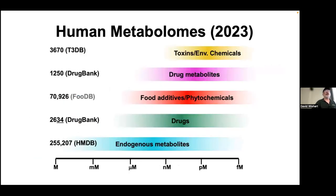Looking at the human metabolome: there are about 250,000 endogenous metabolites. There are around 2,600 mapped drugs, food chemicals and additives, drug metabolites — because drugs are converted to metabolites in the body — and various toxic chemicals including herbicides, pesticides, cosmetic compounds, dyes, and things in clothes or hair. All of those represent part of the human metabolome.